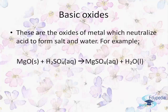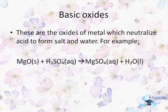Now let's understand basic oxides. These are oxides basically found in metals, and they neutralize an acid to form salt and water. For example, magnesium oxide neutralizes sulfuric acid to form magnesium sulfate, which is a salt, and water. Basic oxides can be either soluble or insoluble; when soluble oxides dissolve in water they form alkaline solutions.